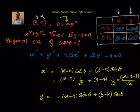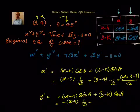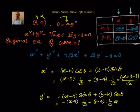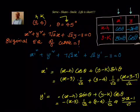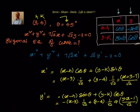Similarly, y' = −(x − h)sin θ + (y − k)cos θ = −(x − 3)·(1/√2) + (y − 4)·(1/√2). Simplifying, we get y' = (y − x − 1) / √2. Now we have x' and y' in terms of x and y, and we substitute these in place of x' and y' to get the original equation.